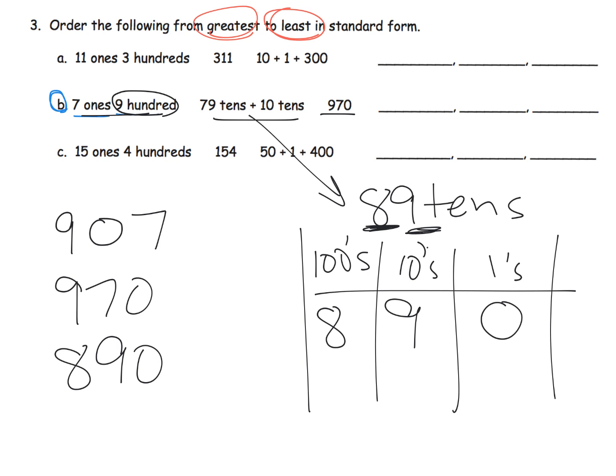So now we're able to arrange it from greatest to least. All right, so who's the greatest? It's going to be nine hundred seventy. And who's next? Nine hundred seven.